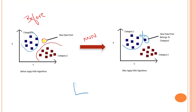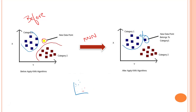We have a dataset — we store all the data. Let's say this is my dataset and we have some more points here. Whenever we get a new data point, based on the similarities it is able to predict which category it belongs to.